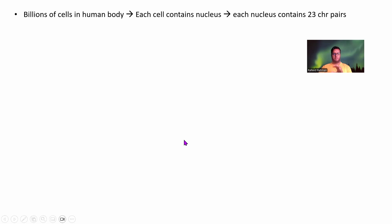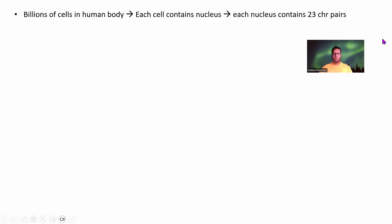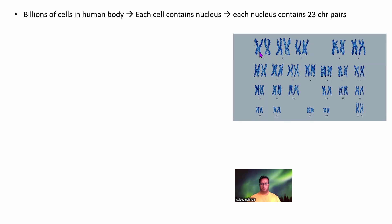Let's start with the simple things. We have billions of cells in the human body and each cell contains a nucleus. Inside each of these nuclei, we have 23 chromosome pairs. So if you have a billion cells in the human body, there are a billion sets of 23 chromosome pairs because these 23 pairs exist in all the nuclei. As you can see, we have a pair of chromosomes for chromosome 1, chromosome 2, chromosome 3, and so on — 23 chromosome pairs in total.